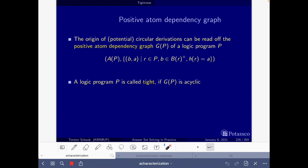Then here we have the definition of the positive atom dependency graph of the program where basically the nodes are the atoms of the program, and for every rule, if in the head we have the atom A and in the positive body we have an atom B, then there's an arc between B and A.